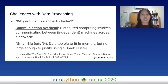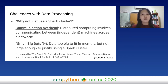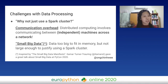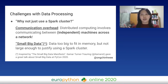Secondly, there is the problem of 'small big data.' Big data is not just about data that is too big to fit in memory — it is also about how diverse the dataset is. You have five dimensions: one is volume, another is variety. Even if your data has large volume, it may not have a lot of variety, and may not be large enough to justify using a Spark cluster.